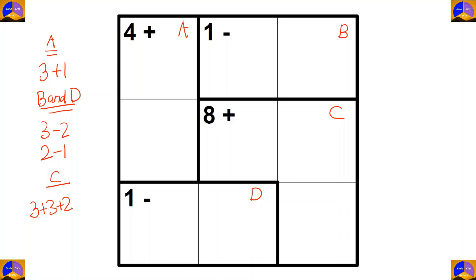Now let's fill in the cages with one option. For cage A it is three and one — we don't know where three and one will go, so we'll write it down. Now in cage C there are two threes and one two. Three can't repeat in the same row or column, so three goes here and here, and two goes here.